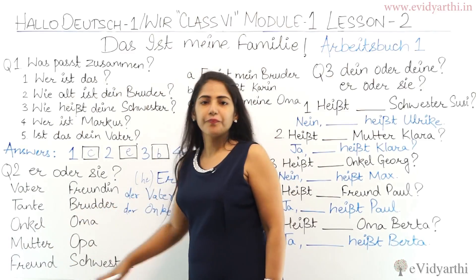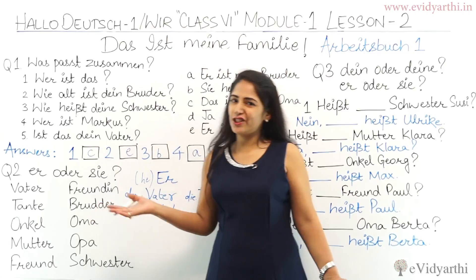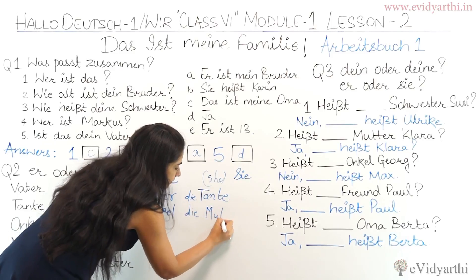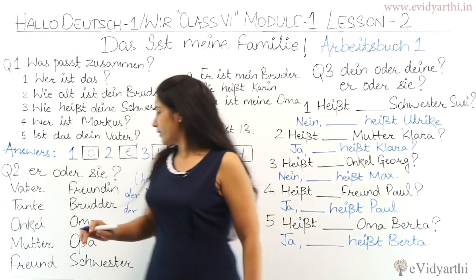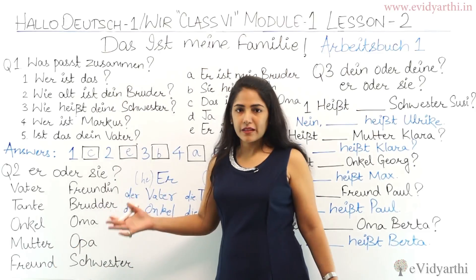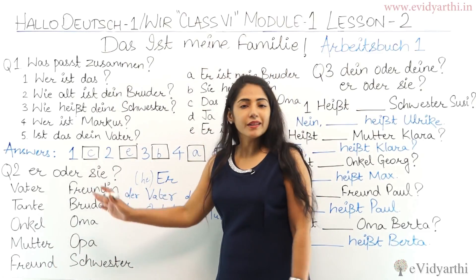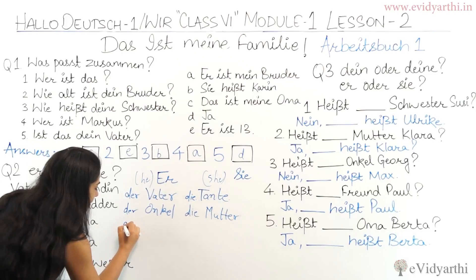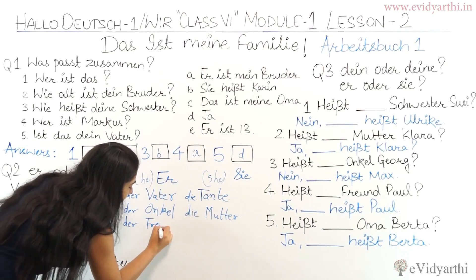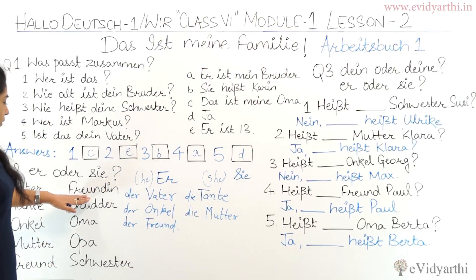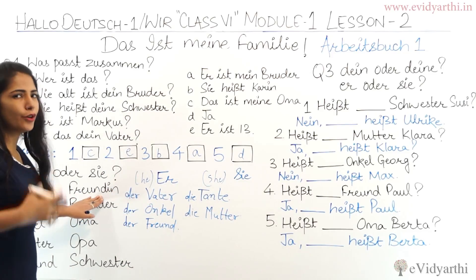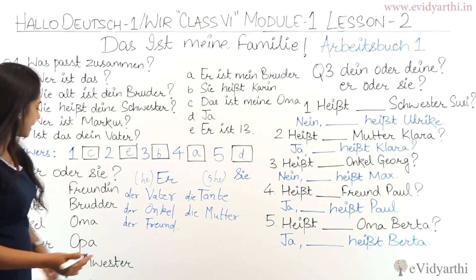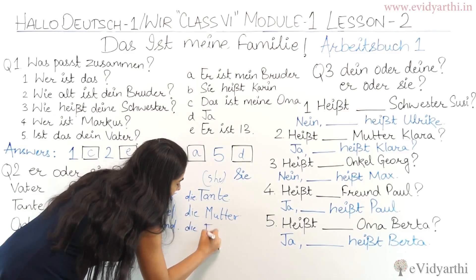Next is 'Mutter,' mother — obviously she, 'sie.' Then 'Freund,' friend — it's without -in, so it's male friend, he — 'er.' Then 'Freundin' — it's with -in, so this is female friend, obviously she — 'sie.'